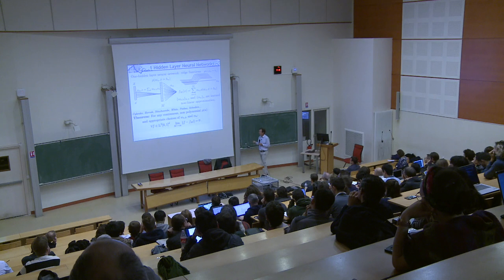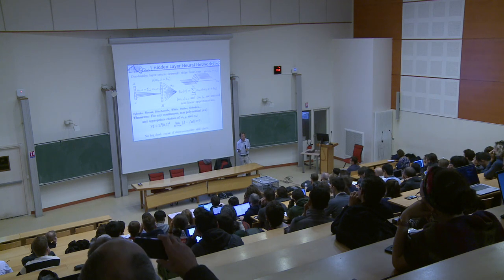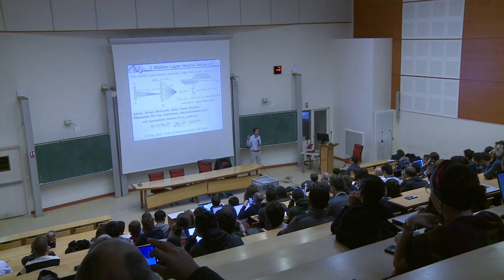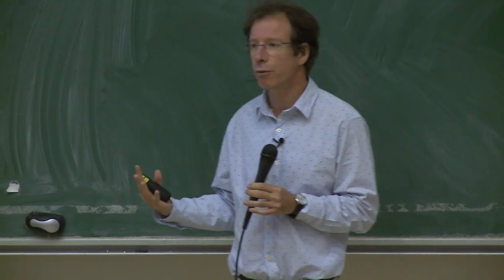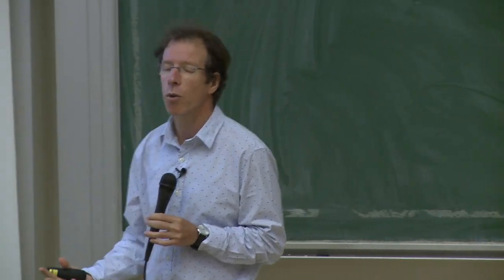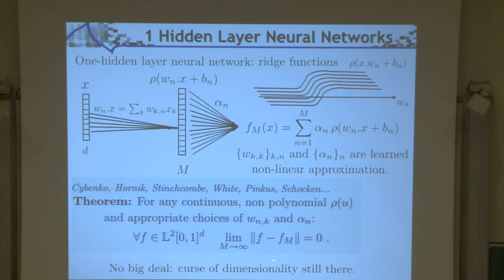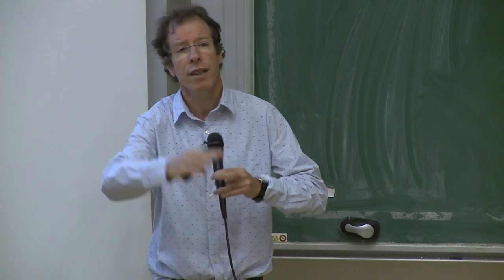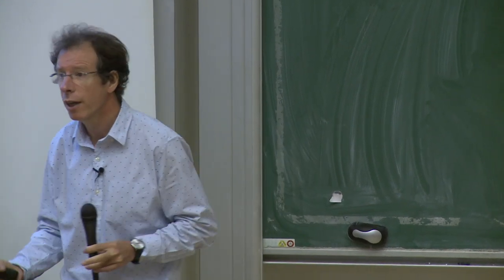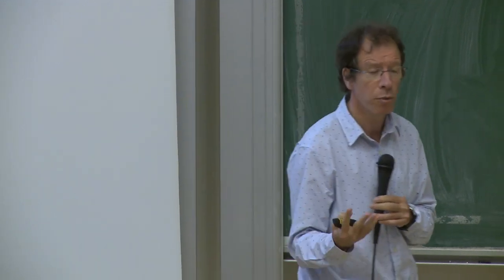For many people, when that theorem came out, they thought it proved you can do anything with a neural net. This is wrong. If you look into the proof, it's really no big deal — not much more powerful than showing you can decompose a function in a Fourier basis. In fact, if you take a complex exponential for rho, you exactly have a Fourier decomposition. This doesn't break the curse of dimensionality: the error goes to zero incredibly slowly.